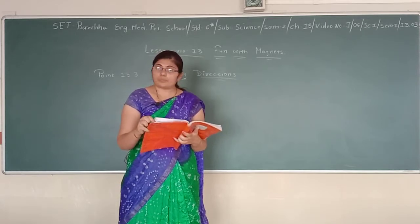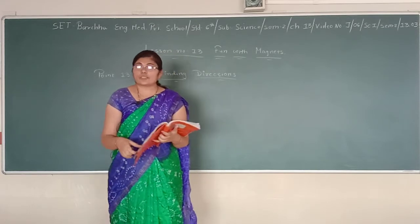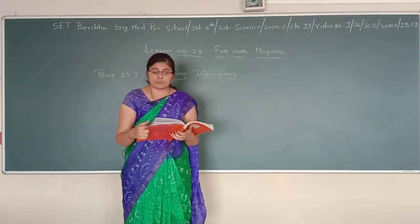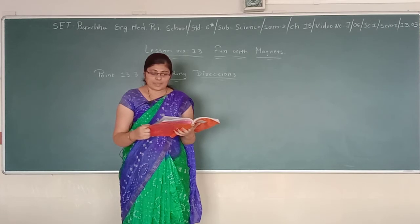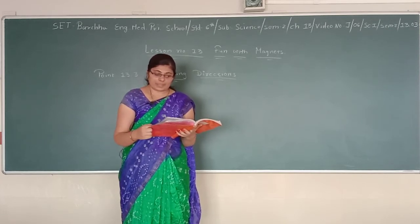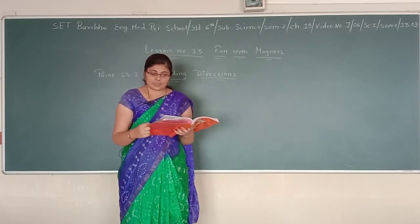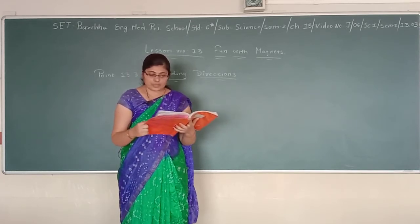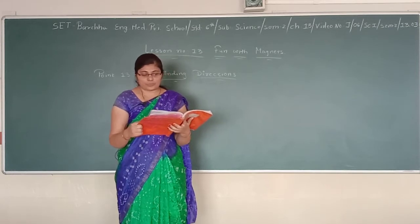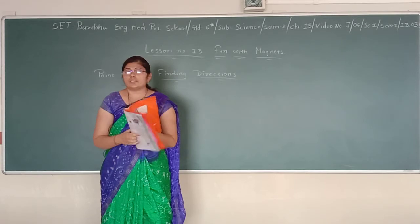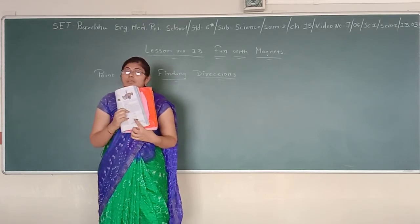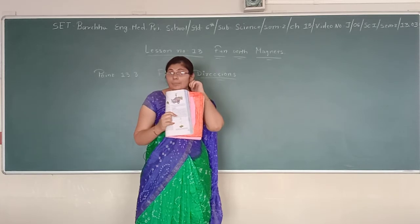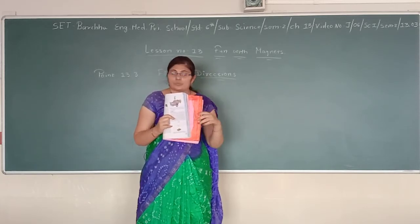Let us make such a direction finder for ourselves. To understand this, we need to perform Activity 5. Take a bar magnet and put a mark on one of its ends for identification. Tie a thread to the middle of the magnet so that it may be suspended from a wooden stand. Make sure that the magnet can rotate freely. Let it come to rest. Mark two points on the ground to show the position of the ends of the magnet when it comes to rest.